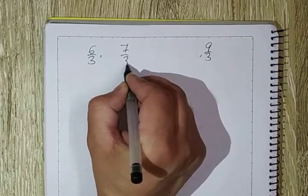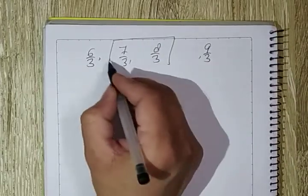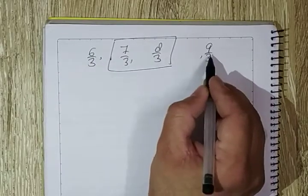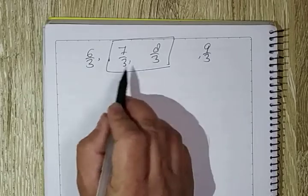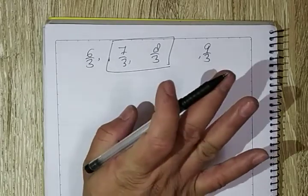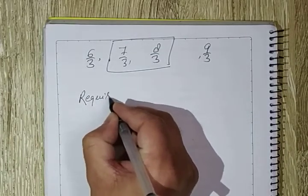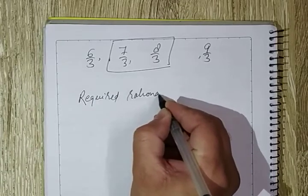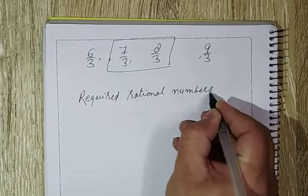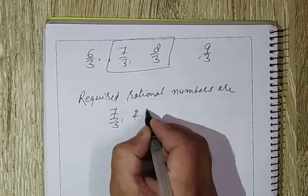Between 6 by 3 and 9 by 3, we can see the numbers 7 and 8 in the numerator. So the required rational numbers are 7 by 3 and 8 by 3.